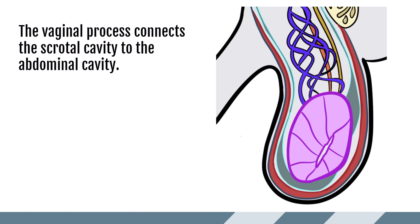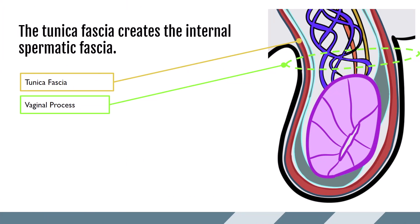The next layers of the scrotum and testicles are derived from abdominal wall structures. The tunica fascia and the peritoneum extend into the scrotum via the vaginal process. The vaginal process will essentially close off during development, separating the abdomen from the scrotum. Inside the abdomen, next to the abdominal wall muscles, is something called the tunica fascia. As the tunica fascia passes through the vaginal process, it will become the internal spermatic fascia, lining the cremaster muscle.